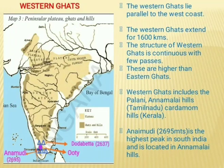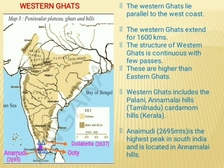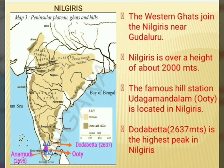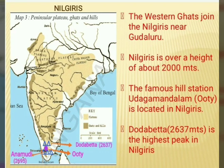The Western Ghats lie parallel to the west coast and extend for 1,600 kilometers. Their structure is continuous with few passes, and they are higher than the Eastern Ghats. Western Ghats include the Palani, Annamalai Hills and Cardamom Hills. Anamudi is the highest peak in South India and is located in Annamalai Hills, at a height of 2,695 meters. The Western Ghats join the Nilgiris near Gudalur. Nilgiris rise to over 2,000 meters. The famous hill station Udhagamandalam, popularly known as Ooty, is located in Nilgiris. Doddabetta is the highest peak in Nilgiris, at a height of 2,637 meters.